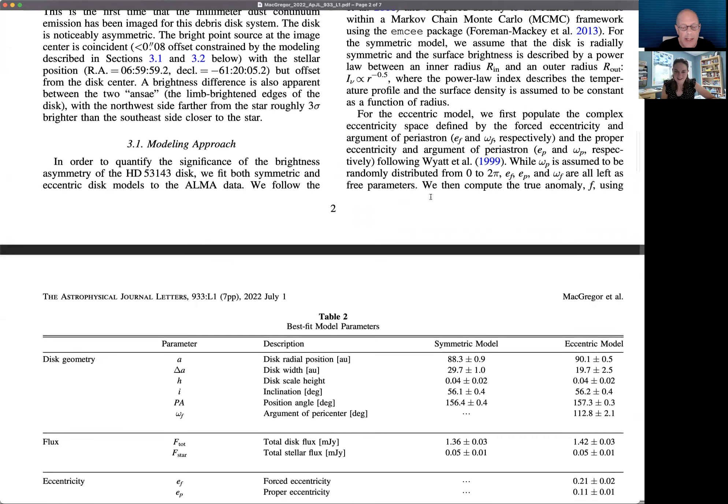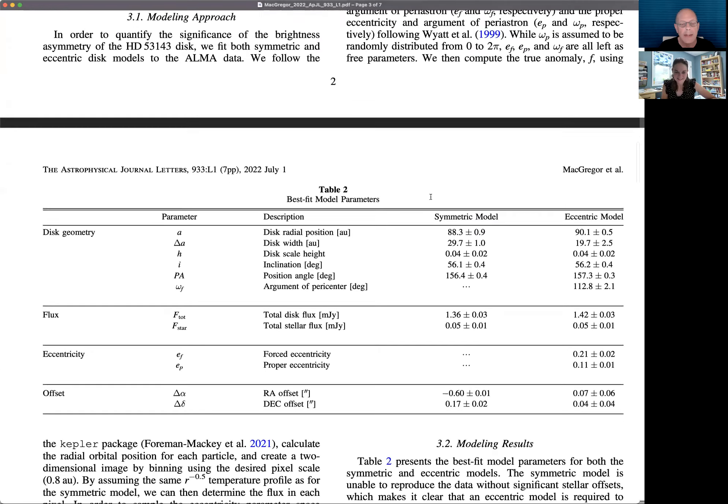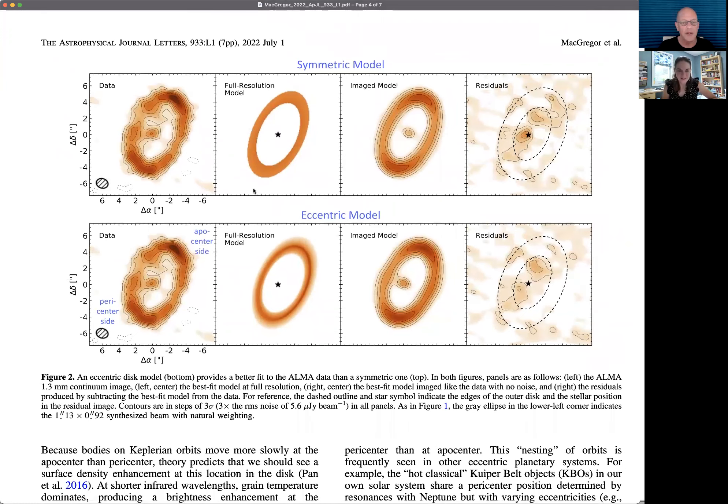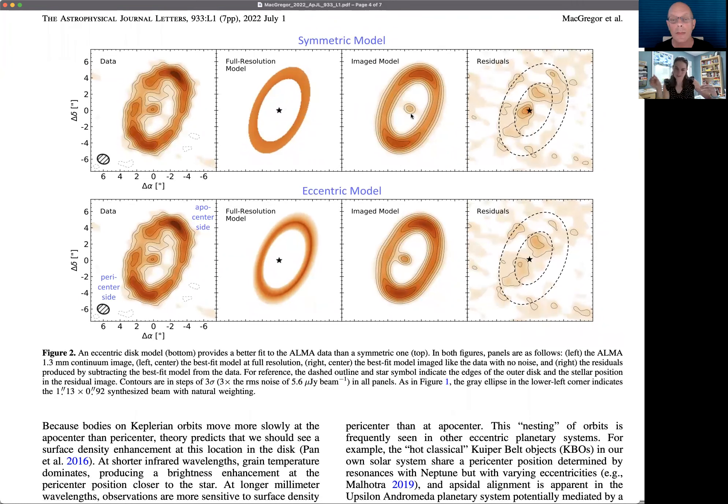When we work with ALMA data, we don't fit our models directly to this image. Your radio interferometer actually samples the Fourier transform of the sky image plane. What we actually get is the Fourier transform of our actual image. To make this image, we need to go through a process called CLEAN, where you take the inverse Fourier transform and account for the fact that your antennas are sparsely sampling Fourier space. That's a non-linear process, so you lose the ability to constrain uncertainties on your model parameters. If you work in Fourier space, you have the raw uncertainties from your measurements. The approach we take is to fit models directly to the millimeter visibilities using an MCMC approach. We use a task called Galario to sample them onto the visibilities and compute the chi-squared.